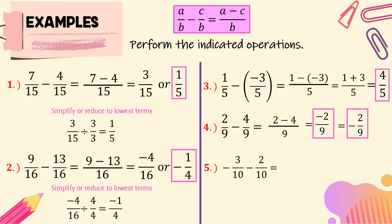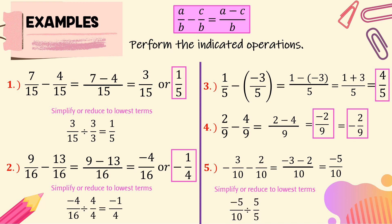For number 5, we have negative 3 over 10 minus 2 over 10. We subtract the numerators — the negative aligned to the fraction bar can be put on the numerator, giving us negative 3 minus 2. Then copy the common denominator, 10. Using the rule of subtraction of integers, the numerator is negative 3 plus negative 2, giving us negative 5 over 10. The greatest common factor is 5. Negative 5 divided by 5 is negative 1, and 10 divided by 5 is 2. So the lowest term is negative 1 over 2.